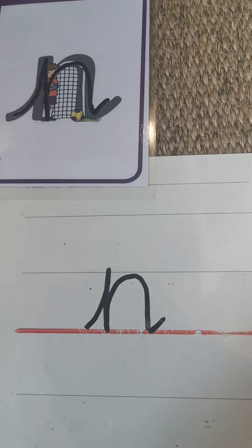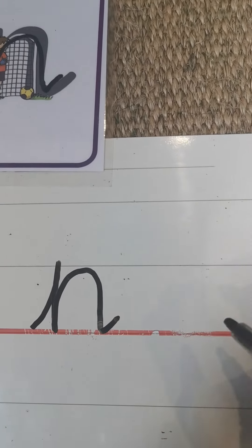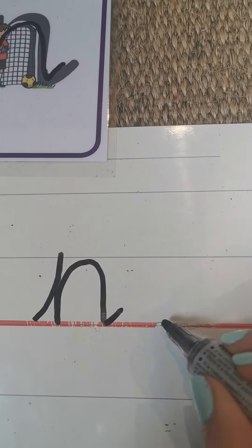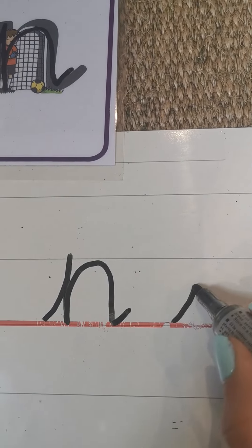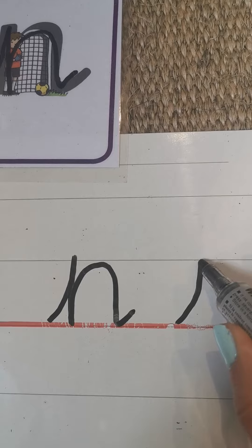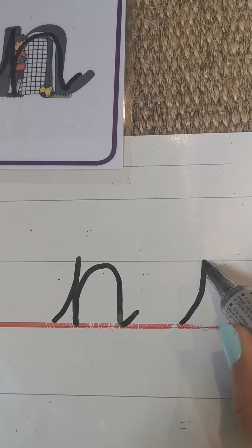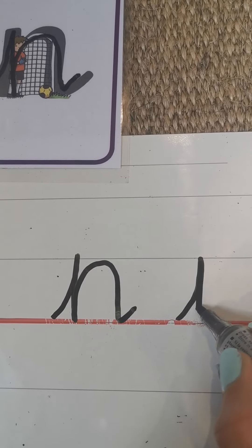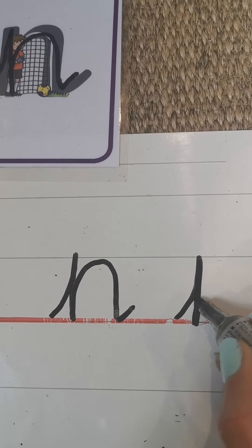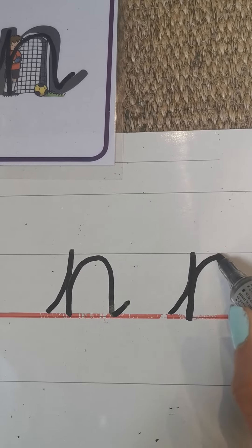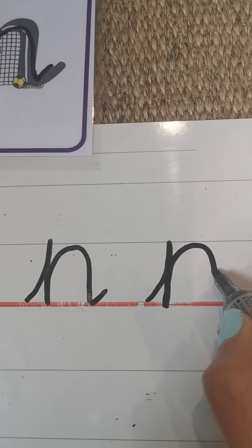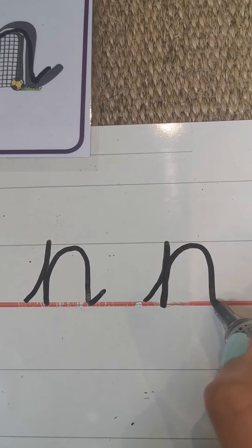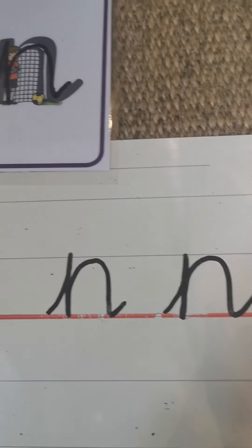Should we do it one more time? In we go, and stop, down knobby, and over his net, and out.